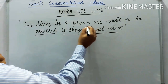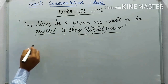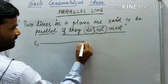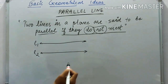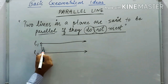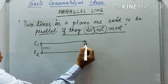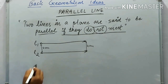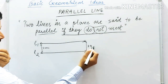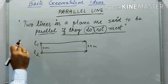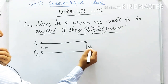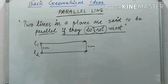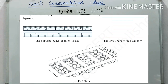The next topic is parallel lines. Two lines in a plane are said to be parallel if they do not meet. Suppose line L1 and L2 have the same distance between them at the starting point — say four centimetres — and the same distance at the end point. If the distance decreases, they are not parallel because they will meet at some point. Lines with equal distances throughout are called parallel lines.